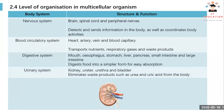Then we have the urinary system, which includes the kidney, ureter, urethra, and bladder. Our kidney acts like a filter in our body — just like a biological filter machine — where it eliminates waste products like urea, urine, and uric acid from our body.